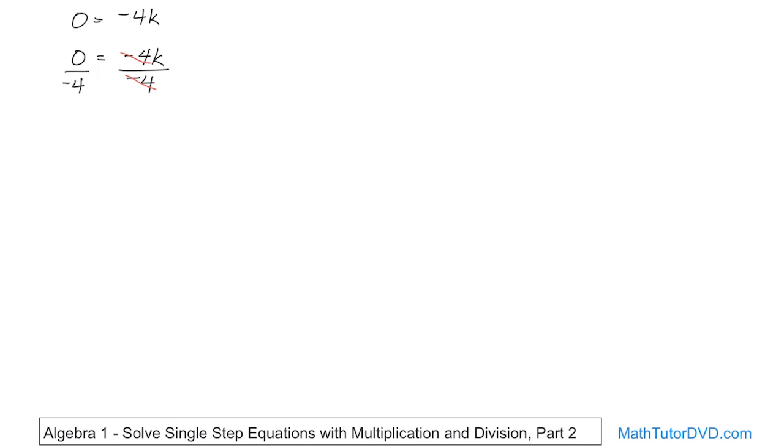When we say cancel, what's happening is you're really dividing. Negative 4 divided by negative 4 is just going to give you 1. So it doesn't really go away or disappear into empty space. It just goes away to 1.